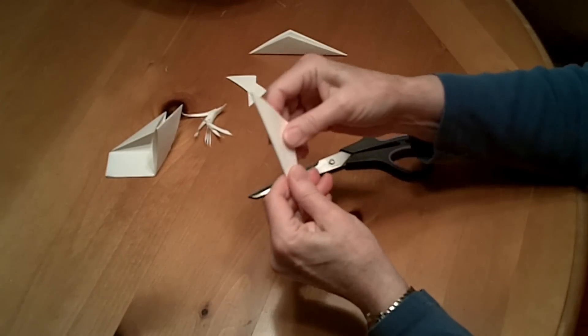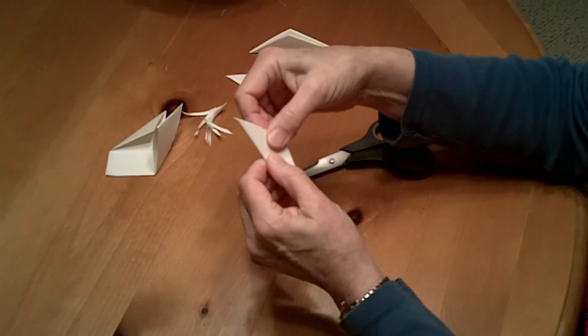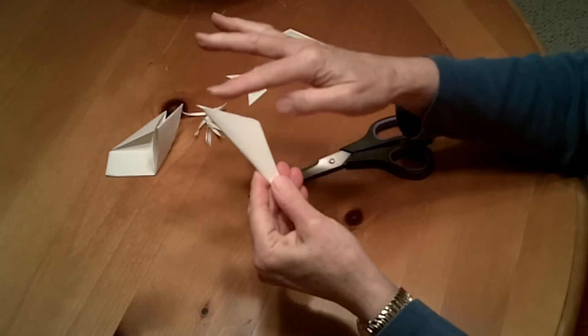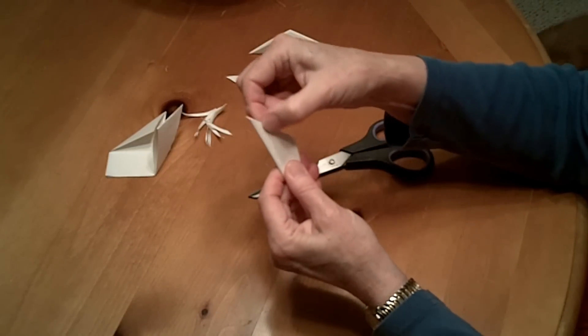So, this is the start of the snowflake. At this point, you can cut from this area on this side or you can cut on this side. Now, I like to have a nice point on my snowflake.